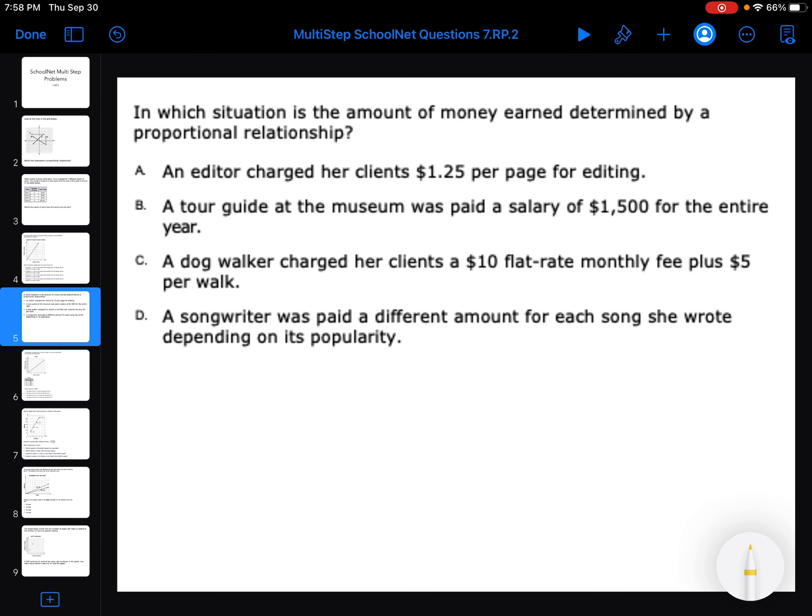Which situation is the amount earned determined by a proportional relationship? So that means it goes up at the same rate. An editor charged her clients $1.25 per page for editing. So every page is $1.25. That sounds promising. A tour guide at a museum was paid $1,500 for the entire year. So it doesn't matter how many tours he does or she does. So that's out. A dog walker charged her clients a $10 flat rate monthly fee plus $5 per walk. Right there tells me it's not proportional. Because remember we talked about proportional relationships being multiplication or division. You can't have addition in there. A songwriter is paid a different amount for each song she wrote. So that means that there's no constant of proportionality. So I was right. It is A.